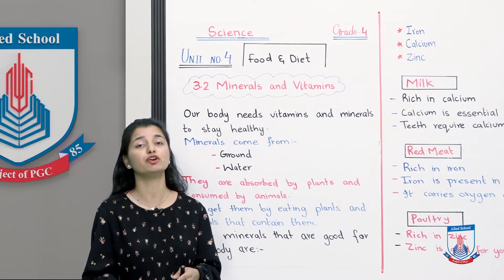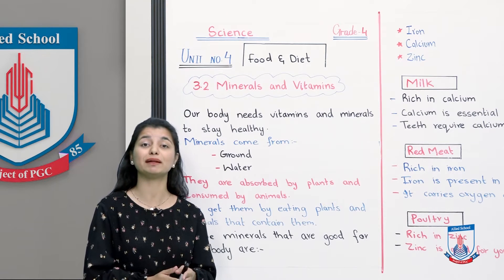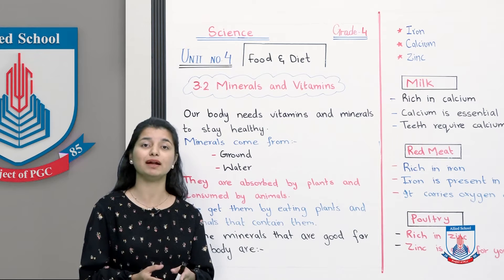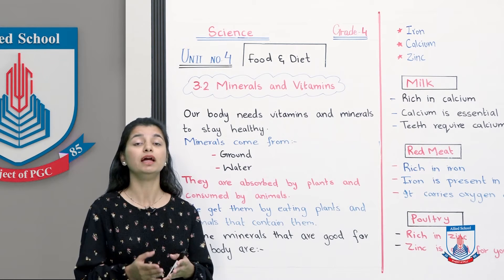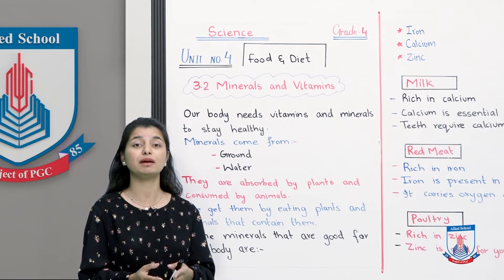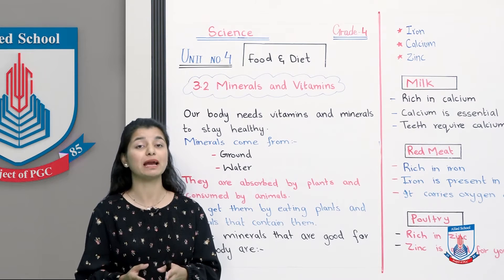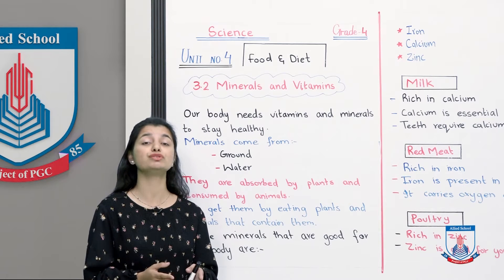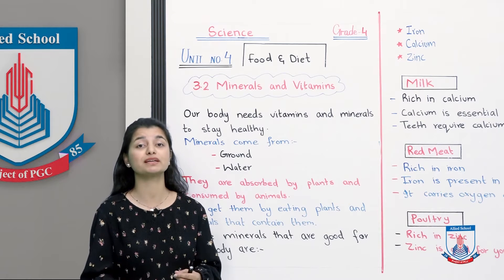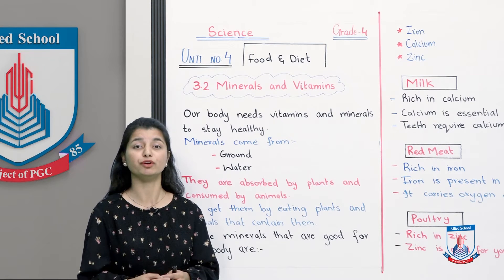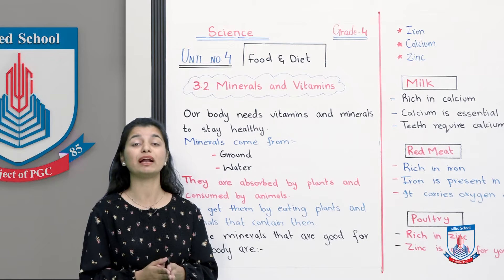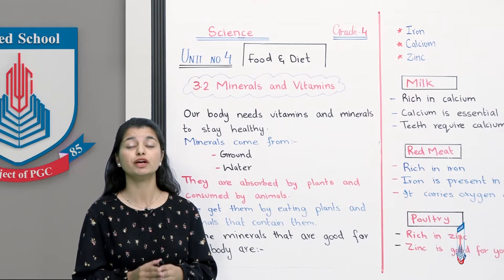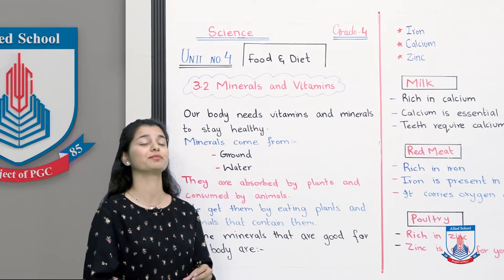Proteins in our food — we know that it is necessary for our muscles. Carbohydrates — we have understood that there are two types: one is simple and the other is complex. So now we are on to the third subunit, which is about minerals and vitamins. Let's begin reading about minerals.